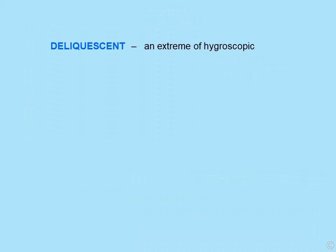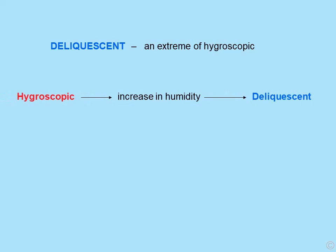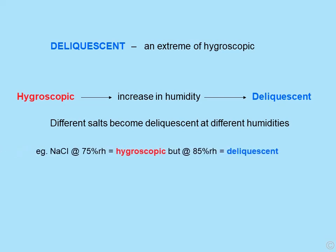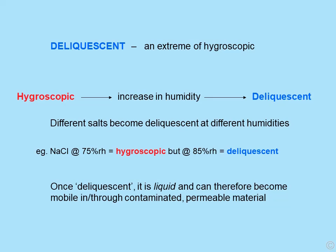There is an extreme of hygroscopic behaviour known as deliquescence. If we take a hygroscopic salt and increase the humidity around it, it can absorb so much water that it will actually start to dissolve in itself — different salts become deliquescent at different humidities. For example, sodium chloride at 75% RH is hygroscopic and goes sticky. Increase the relative humidity to 85% and it starts to become liquid, absorbing so much water it dissolves in itself. Once deliquescent it is a liquid and can become mobile in and through contaminated permeable materials.